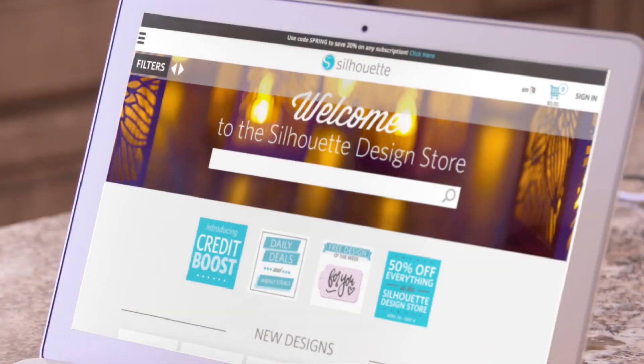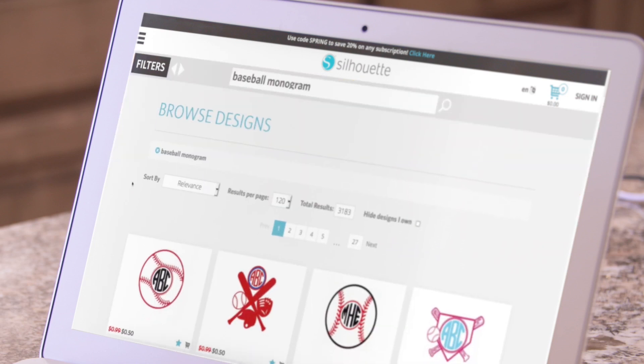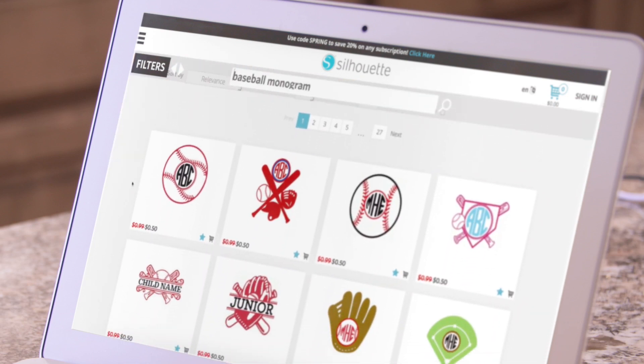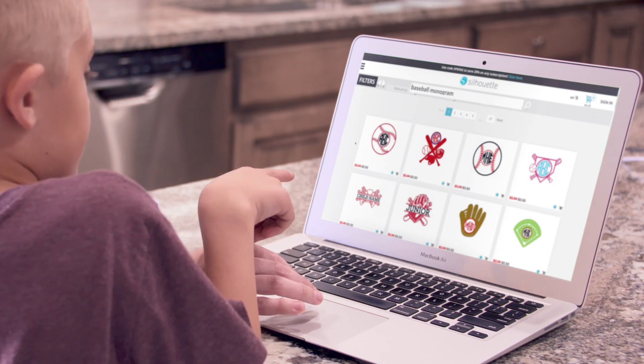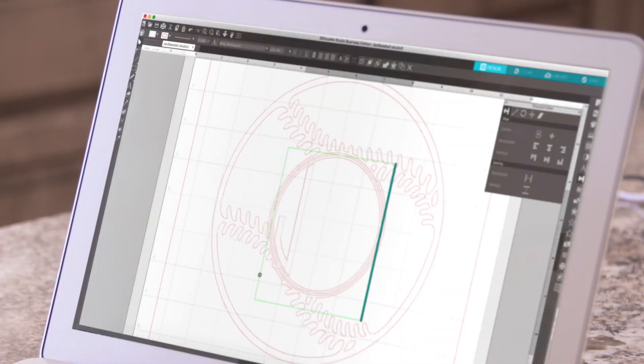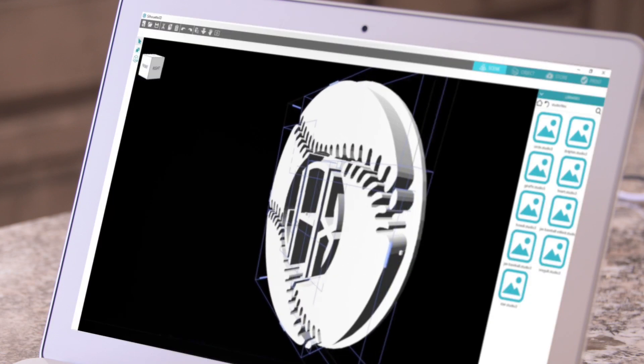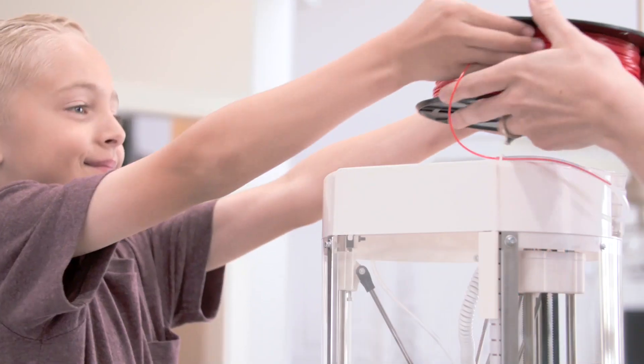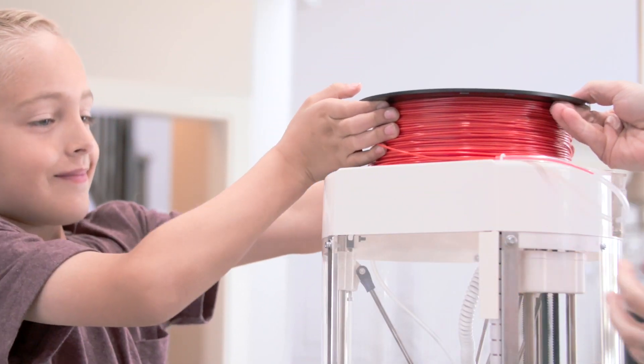Simply select your design from the Silhouette Design Store or create one yourself. Customize it. Select your filament color and print something amazing.